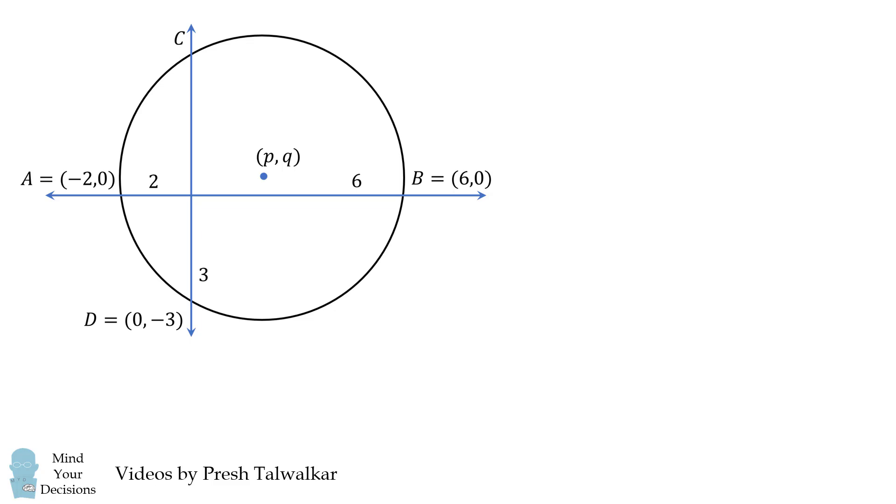We're now going to use these points and the equation for a circle to get some equations. So from point A, we're going to get the equation that (-2 - p) squared plus q squared is equal to r squared. We can then set up an equation for point B. Now using these two equations, imagine subtracting them. We'll cancel out the q squared and the r squared terms. We can then very quickly solve that p is equal to 2.